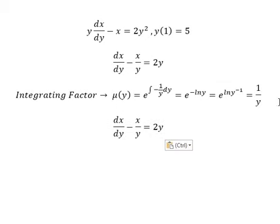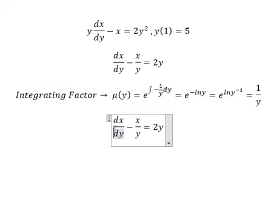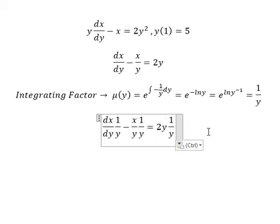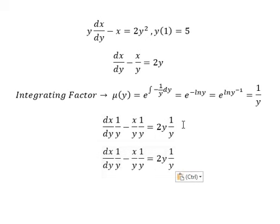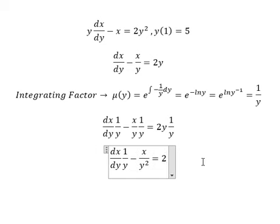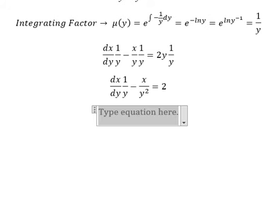And this one equals one over y. So that means we multiply both sides by this. So this one equals x over y squared. This one we have number two. Next we put the integration for both sides.